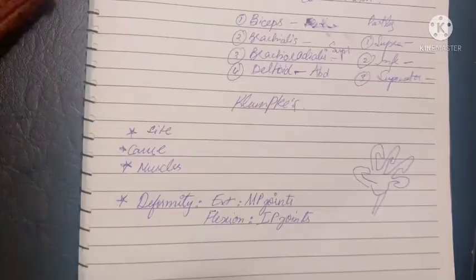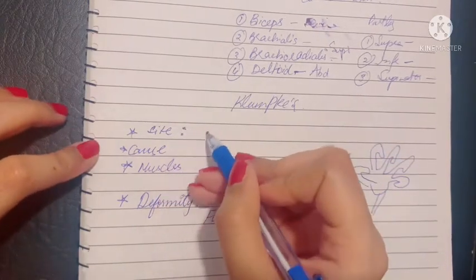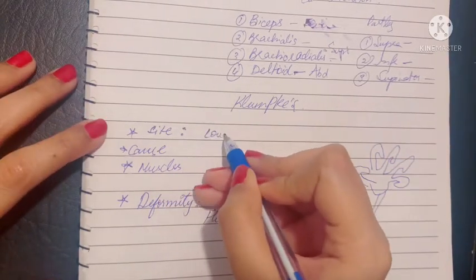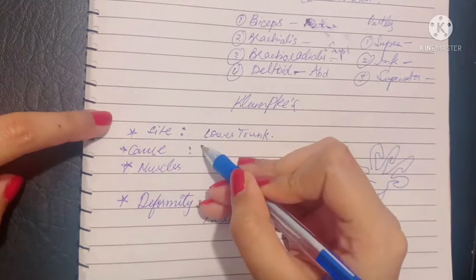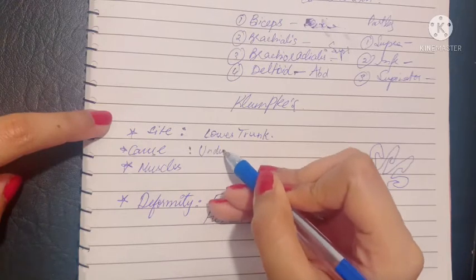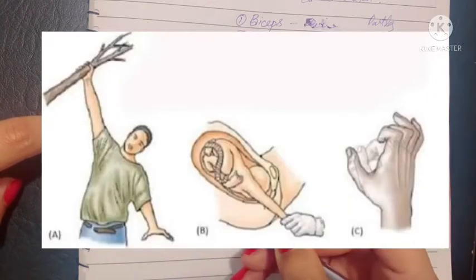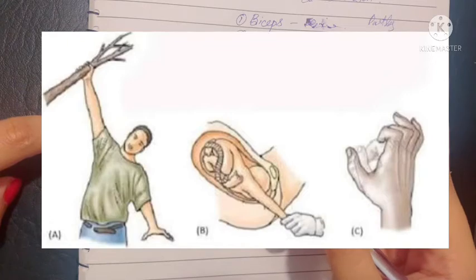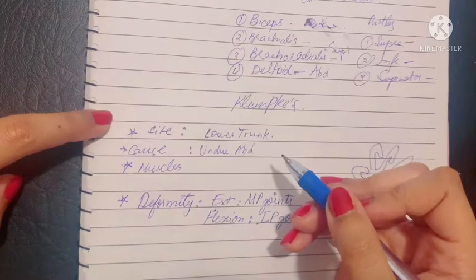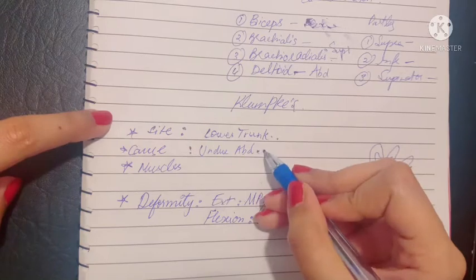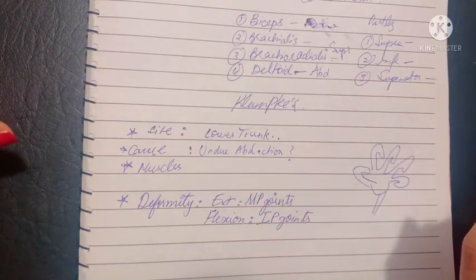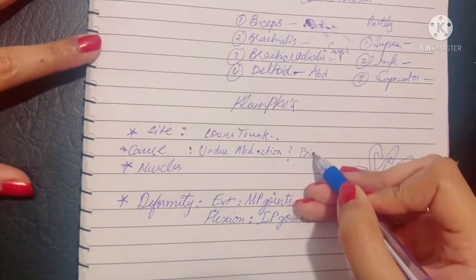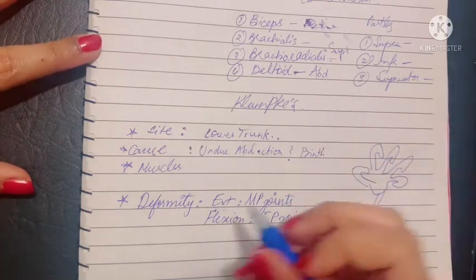Moving on, let's talk about Klumpke's paralysis. Klumpke's paralysis is when there is damage to the lower trunk of the brachial plexus. The cause is excessive abduction of the shoulder, which results in the head and shoulder coming very close together, causing lower trunk damage. This happens when a person falling from a height holds onto a bar suddenly, or during birth.